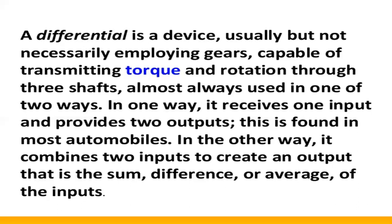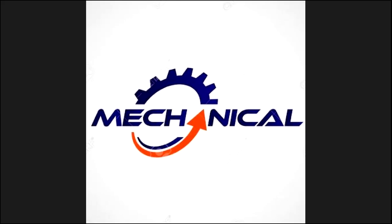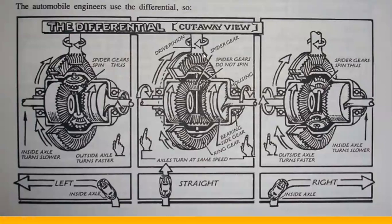In the other way it combines two inputs to create an output that is the sum, difference, or average of the inputs. This output is transmitted through the automobile wheels in different ways. Different types of differentials are used in the automobile to transmit the torque to the different wheel drives.